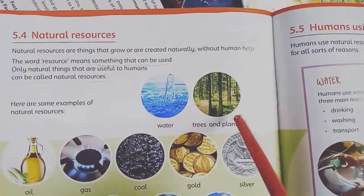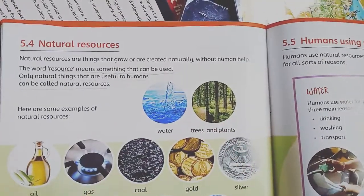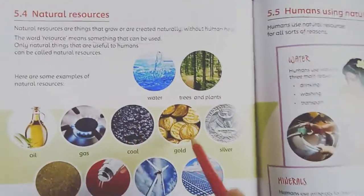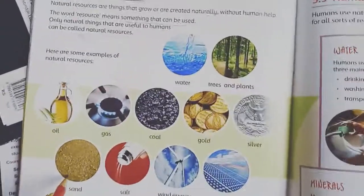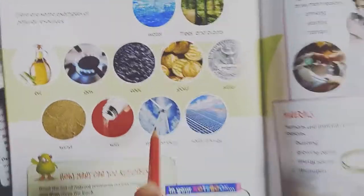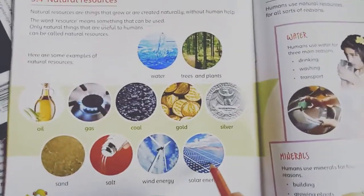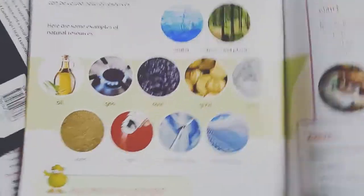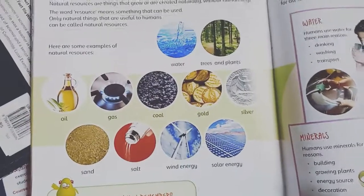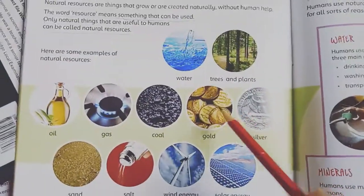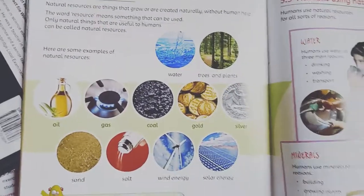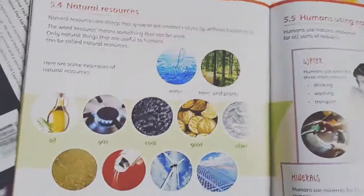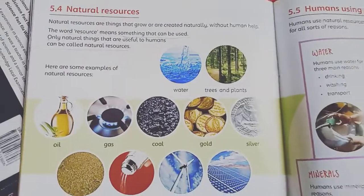The natural resources include: water, trees and plants, oil, gas, coal, gold, silver, sand, salt, wind energy, and solar energy. You have to make a list of all these resources, decide which ones you can keep in mind, and then write them after learning them.